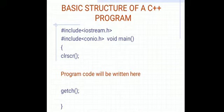Moving towards the main function — the main function is also called a method. It is a function from which the actual execution of a program starts.